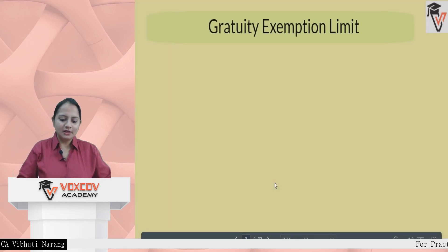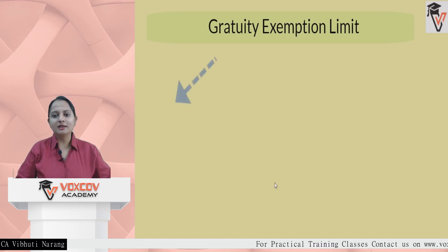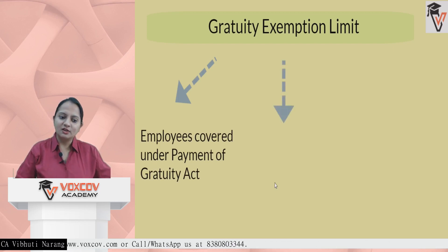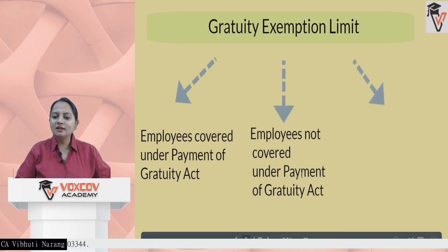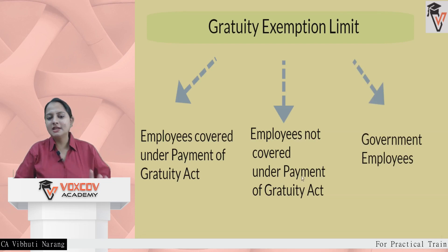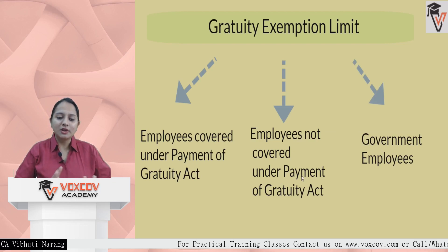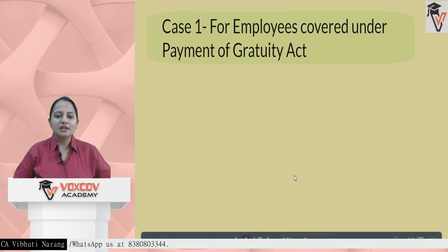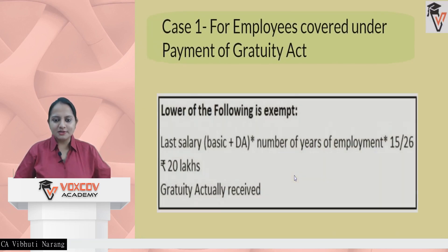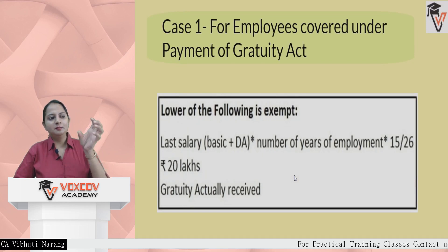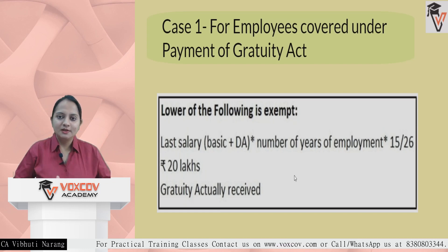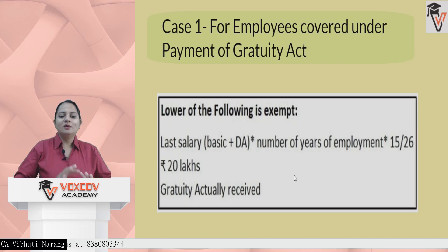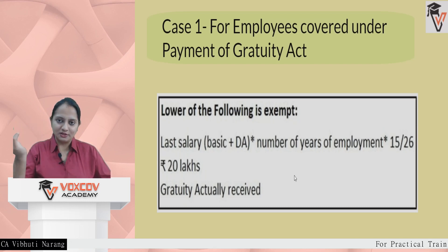For gratuity exemption limits, employees are bifurcated into three categories: those covered under the Payment of Gratuity Act, those not covered under the Act, and government employees. Government employees — whatever they receive is fully exempt. For the other two categories, the key principle is that the minimum of certain limits is exempt in nature, unlike allowances or perquisites where different rules apply.